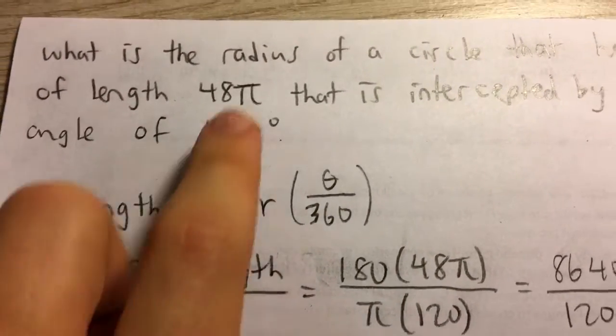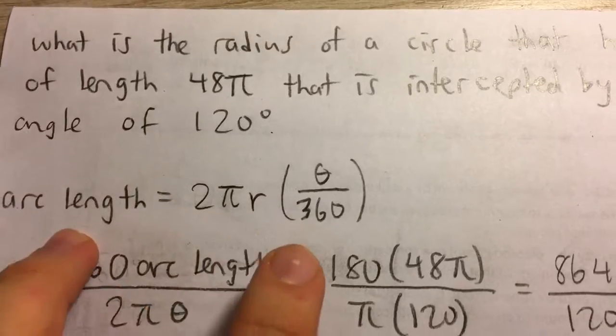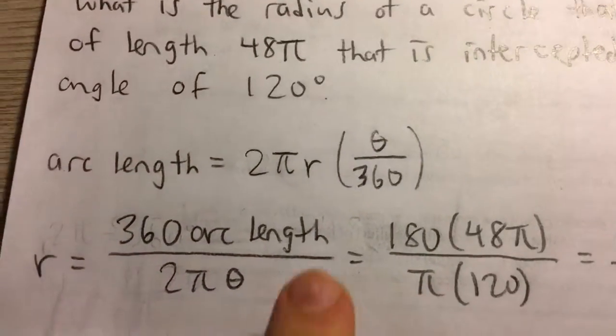And so here, we're trying to find the radius of the circle and we're given the arc length and the angle. So let's solve for r.